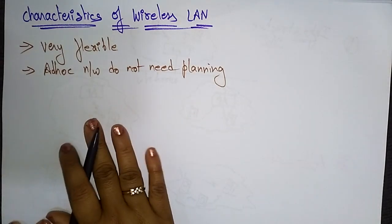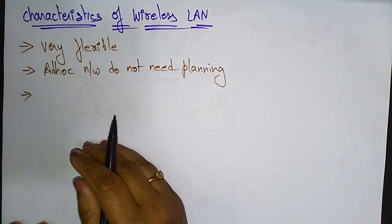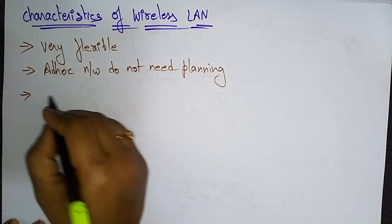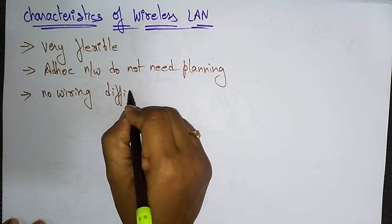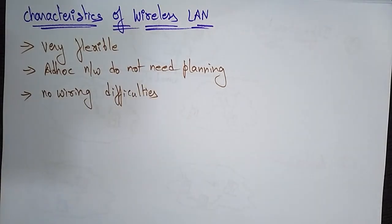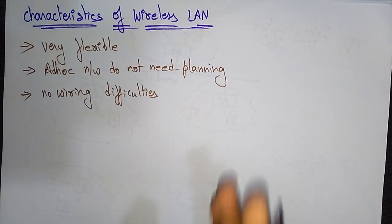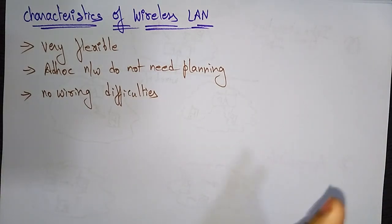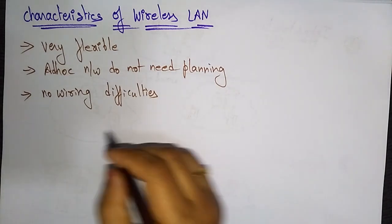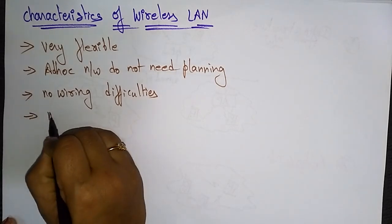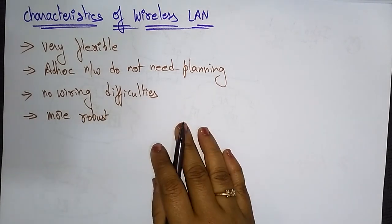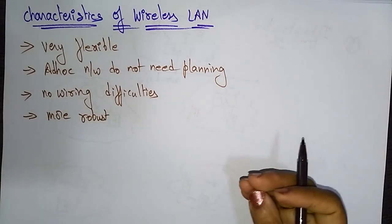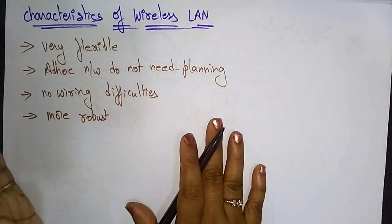Almost no wiring difficulties exist because it is wireless. For example, in historic buildings or areas with firewalls, there is no need for wiring. Also, wireless local area networks are more robust against disasters like earthquakes and fire.